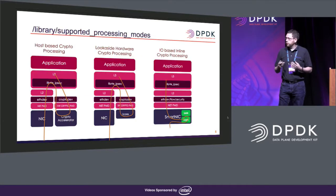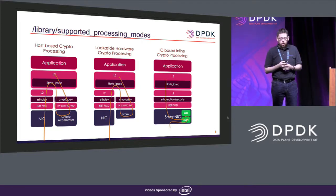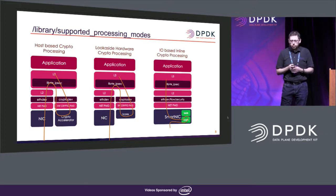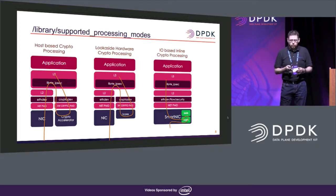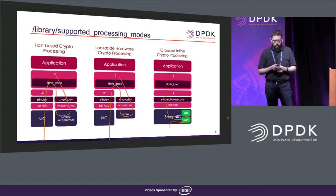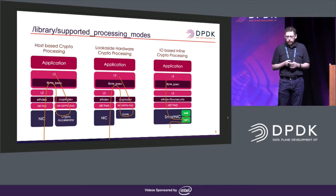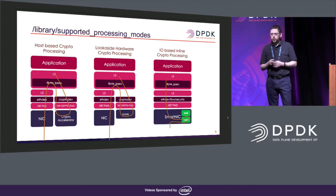In terms of what we're focusing on within Intel — the most costly processing part of IPsec is the crypto overhead. So we're focusing on three models: CPU-based crypto processing, the look-aside model using a hardware accelerator, and the new inline-based models where crypto processing happens on ingress and egress through the physical device.